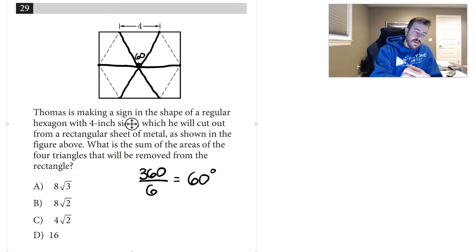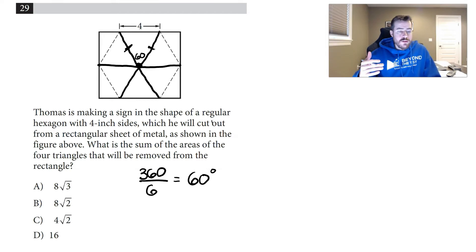Now we can see, if this is the center of the circle and this is a regular hexagon, then we know that these two sides have to be the same. If those two sides are the same, that means it's at least an isosceles triangle, and if the two sides are the same, then the base angles have to be the same, so they would both have to be 60.